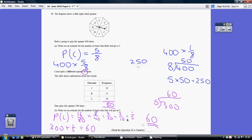We're spinning it 300 times, so 300 times a fifth, which is the same thing as dividing 300 by 5, which is 60.